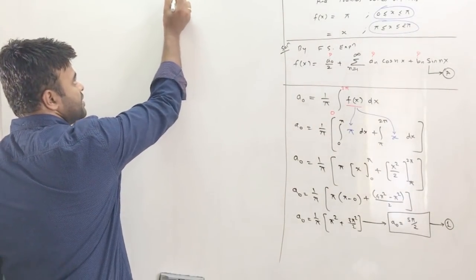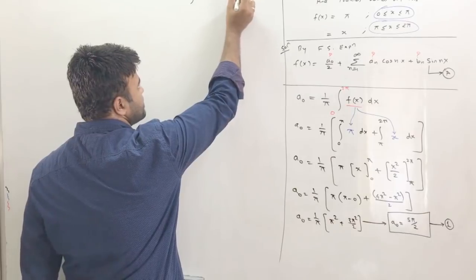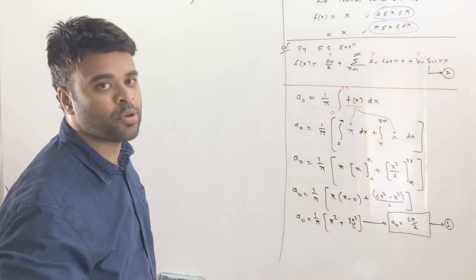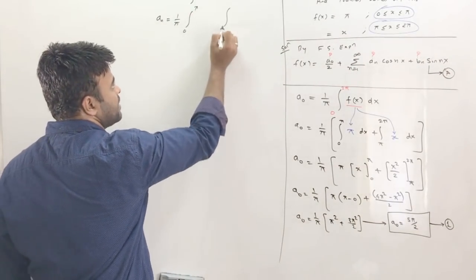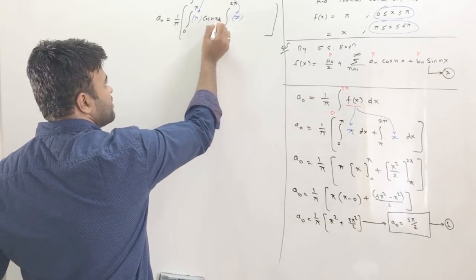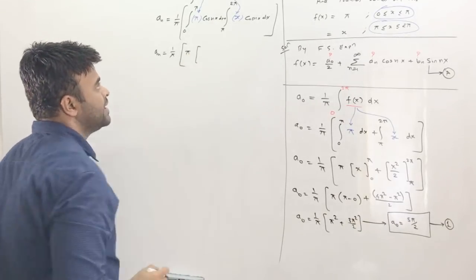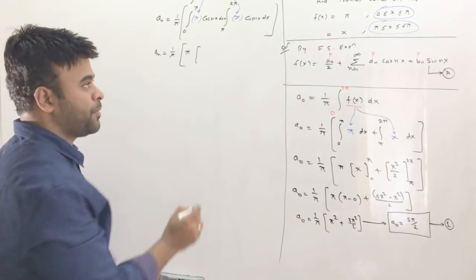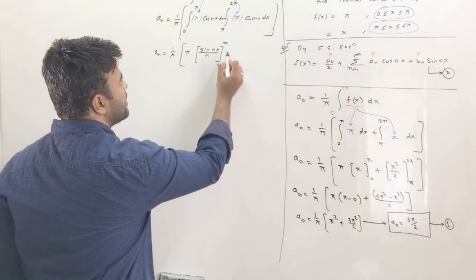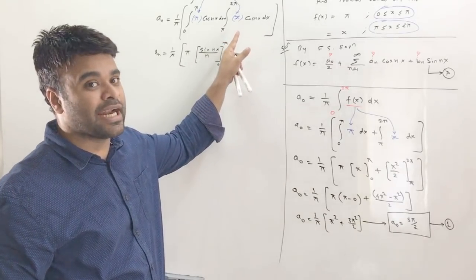Next, let's find aₙ. The formula is 1/π times the integral from 0 to 2π of f(x)·cos(nx) dx. For the first piece from 0 to π where f(x) = π, the integral of π·cos(nx) gives sin(nx)/n.